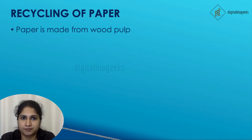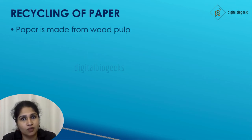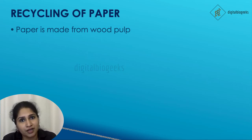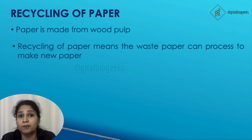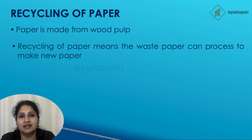Recycling of paper. We know that paper is made from wood pulp — wood pieces are crushed to make wood pulp. You know, 17 big trees are cut to make one ton of paper. But we can recycle and reuse paper. Recycling of paper means waste paper is processed to make new paper so that we can use it again. If each student saves one sheet of paper a day, we can save some trees in a year.